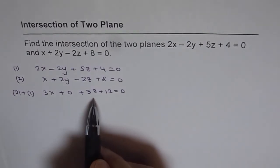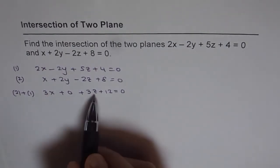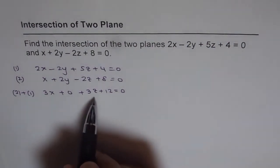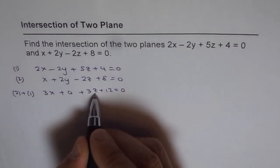Now we have an equation with two variables, x and z. To solve this, we need to introduce parameters. Let's say z equals t.